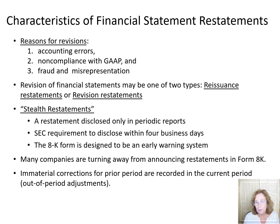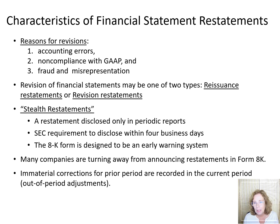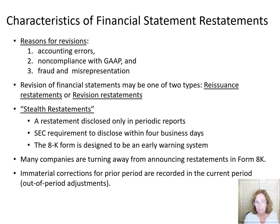When financial statements are revised, the reason generally is because of errors in previously issued financial statements, including accounting errors, non-compliance with GAAP, and fraud or misrepresentation. A revision of financial statements that were previously publicly reported may be one of two types. Reissuance restatements are the more serious because the company communicates that past financial statements cannot be relied upon. Revision restatements, on the other hand, do not undermine reliance on past financials.